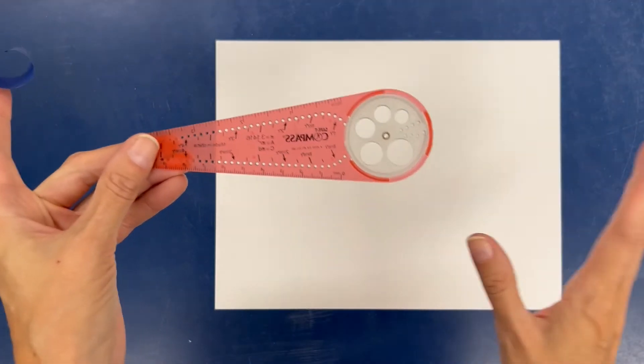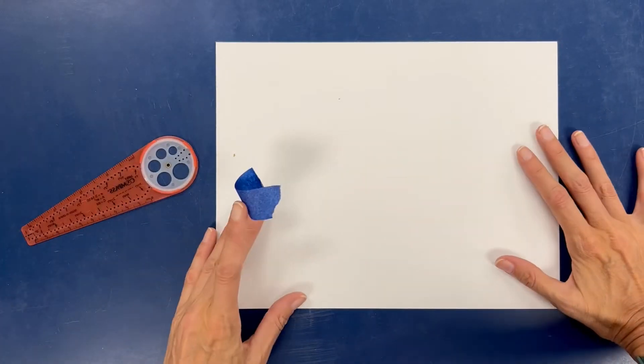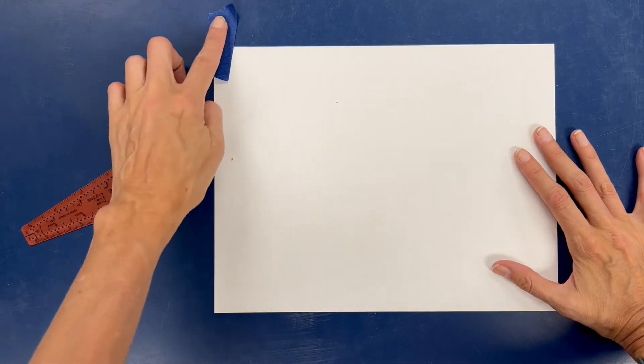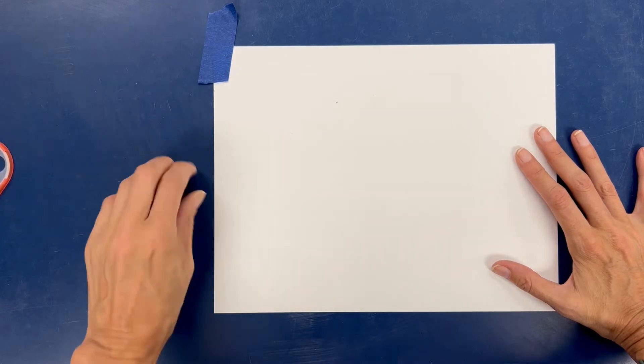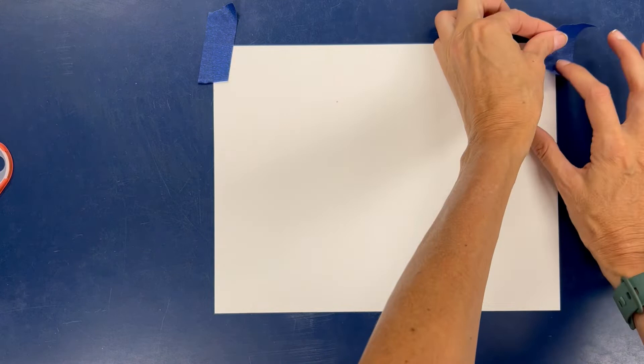So what we're going to do right now is make some circles. I've got my piece of paper. I'm going to tape down the sides a little bit only because I'm going to be using two hands to draw and I really don't want my paper to move. So I think that'll cut it.